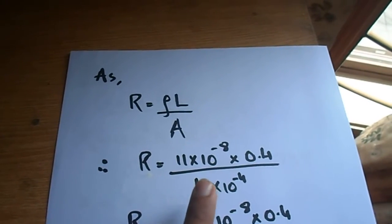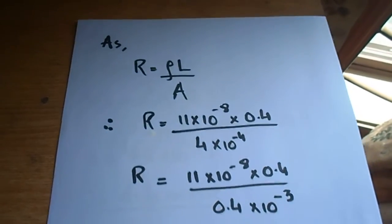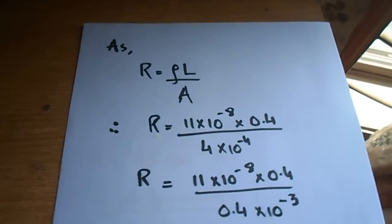Rho is 11 into 10 to the power minus 8, length is 0.4, area is 4 multiplied by 10 to the power minus 4.